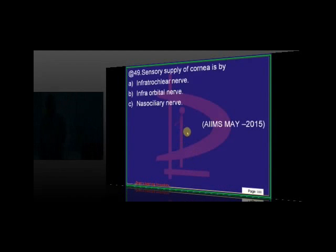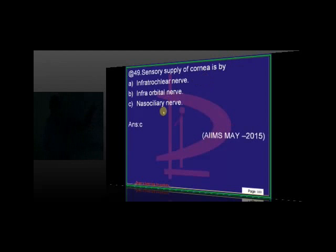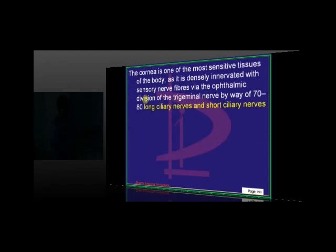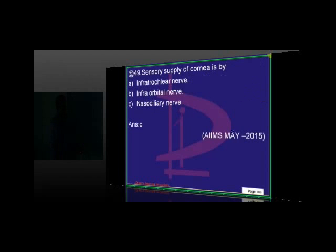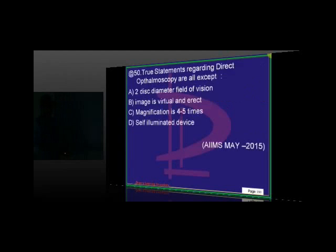What is sensory supply of cornea because of? Nasociliary nerve is the one which supplies the cornea. There are about long ciliary and short ciliary nerves which ultimately go and supply the cornea is what need to be remembered. Which one? Nasociliary? Was long ciliary, short ciliary were there? Okay, anyway. Whatever be the options, cornea nerve supply. I mean, to know the fact is ultimately the point.